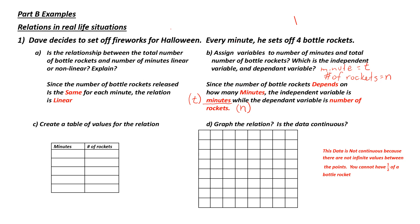Part C: Create a table of values for this relation. The easiest point to start with is zero minutes — if I have zero minutes, zero bottle rockets have been let off. Going up by one: after one minute, four bottle rockets; after two minutes, eight bottle rockets; after three minutes, 12 bottle rockets; and after four minutes, 16 bottle rockets.